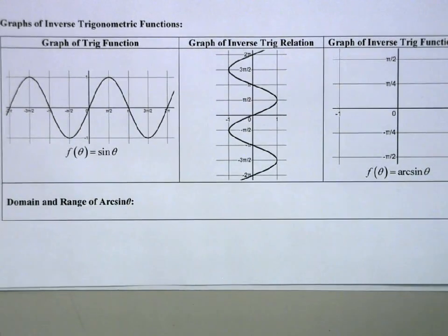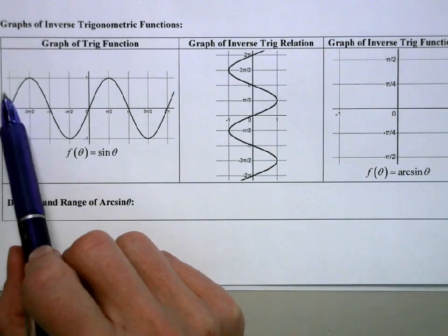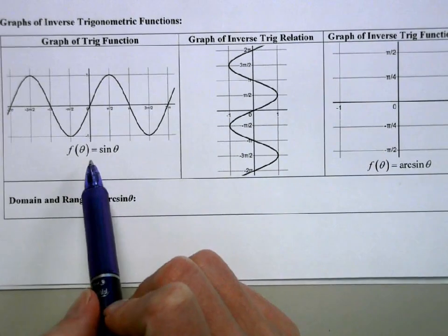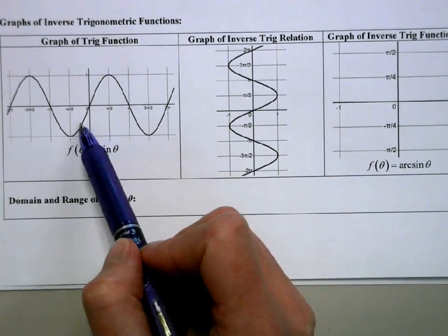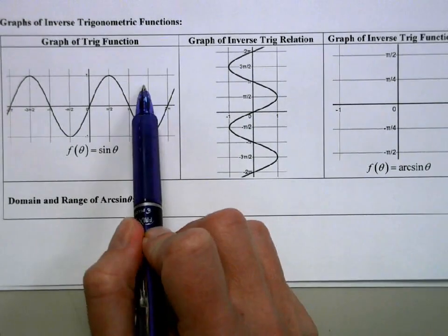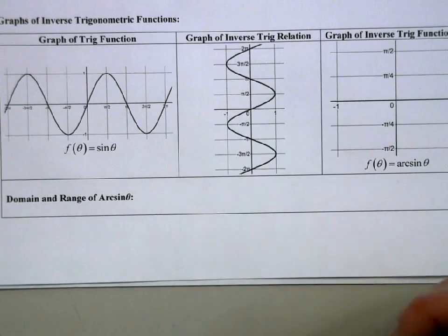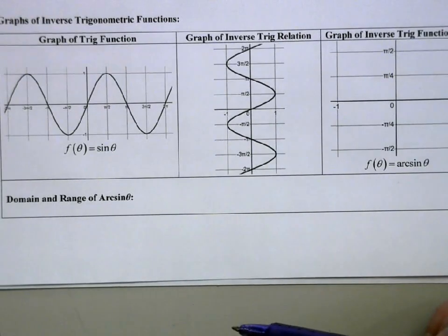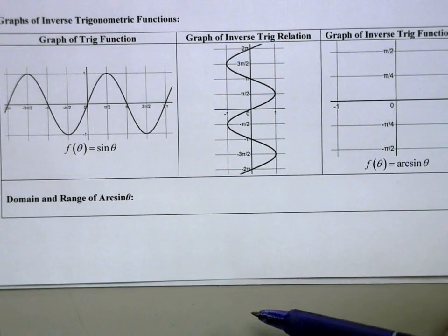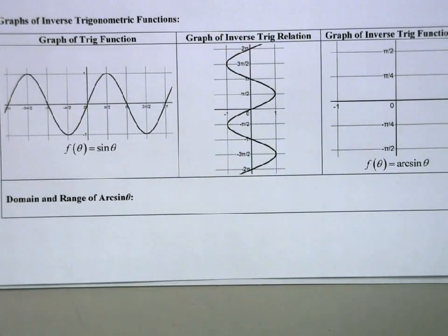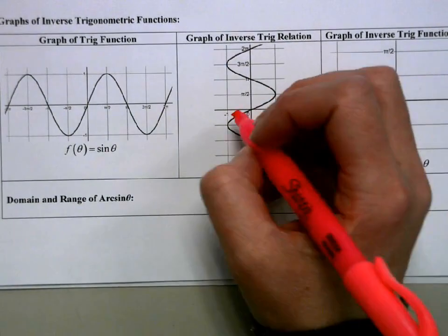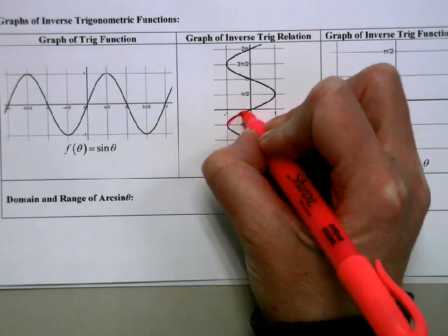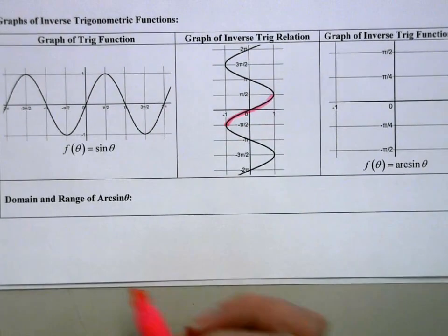We have the graph of sine. We immediately know that when I reflect it over the line y equals x, I'm not going to have an inverse function. The horizontal line test fails — sine is not one-to-one. For every input there's one output, but for every output there's an infinite number of inputs. So when we flip it over and get the inverse, this is not a function. But if you type sine inverse of 1 half in your calculator, it's going to give you an answer — so where are we getting that answer? We have to put a restriction on the range. The restriction that somebody somewhere decided on is from negative pi over 2 to pi over 2.